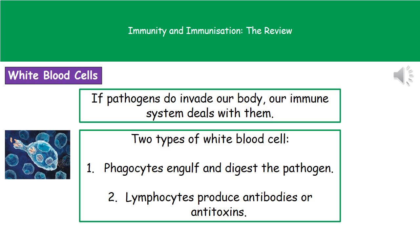Despite having all those barriers, every so often one of these pathogens will get inside our body. At that point we go into our second line of defence, which is the immune system. The primary part of our immune system are the white blood cells. We have two different types: phagocytes, which engulf and digest the pathogen, and lymphocytes, which produce antibodies or antitoxins to that particular pathogen.